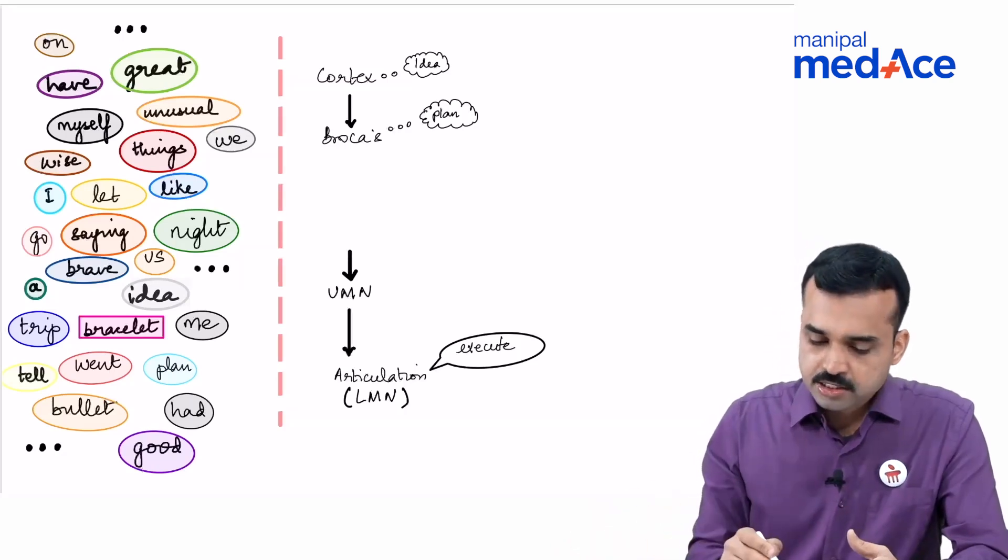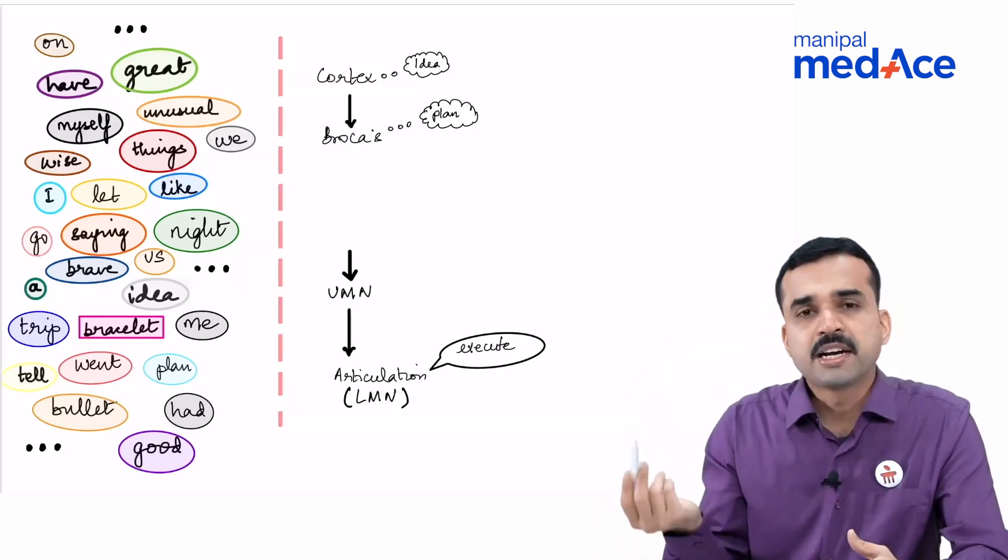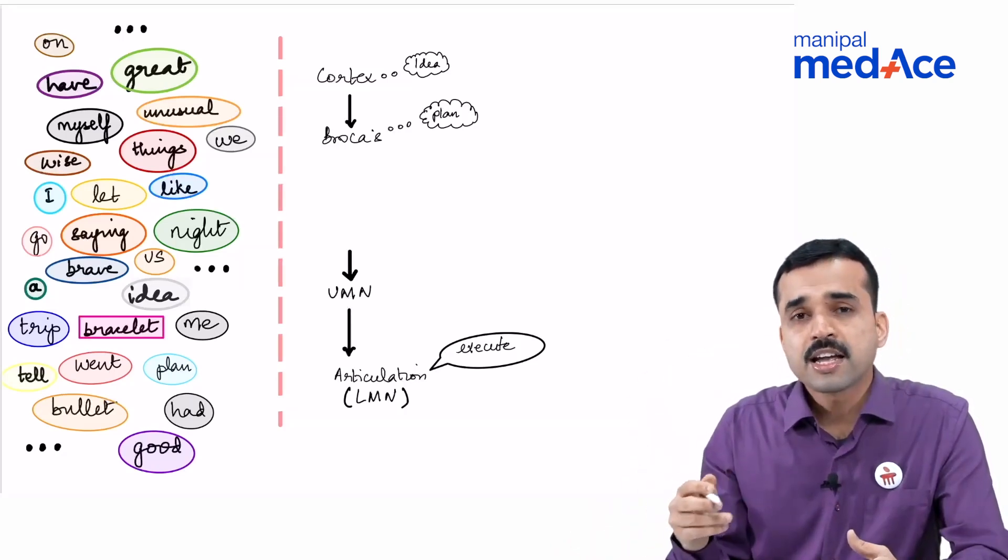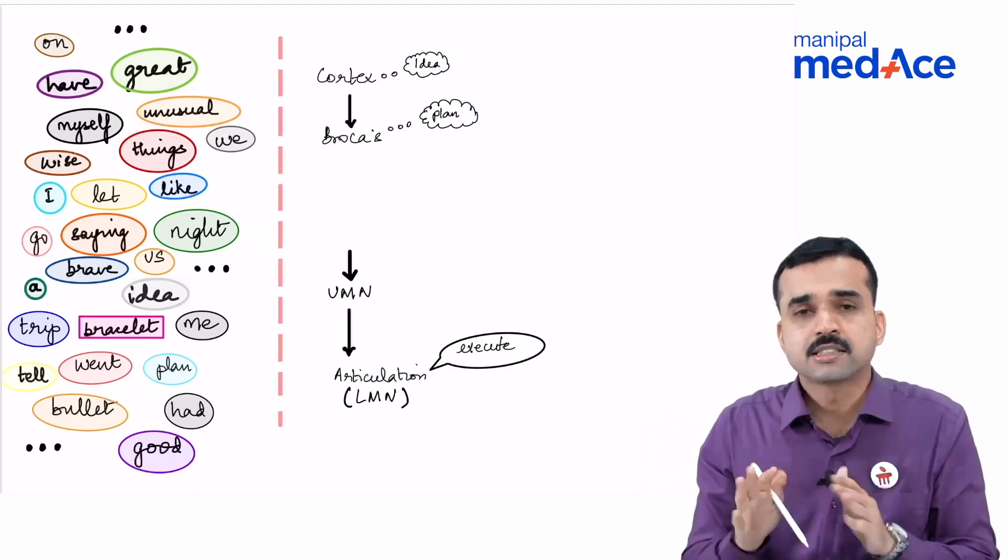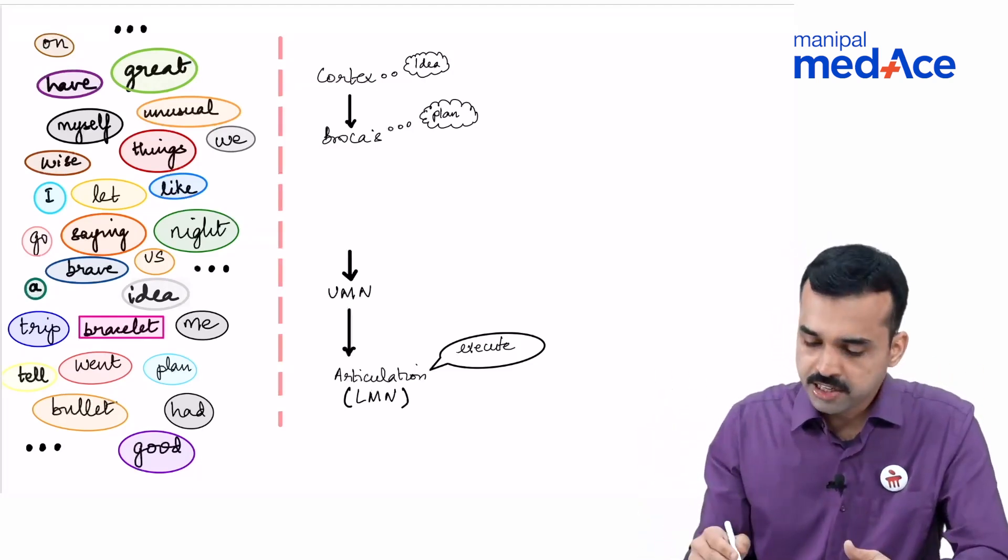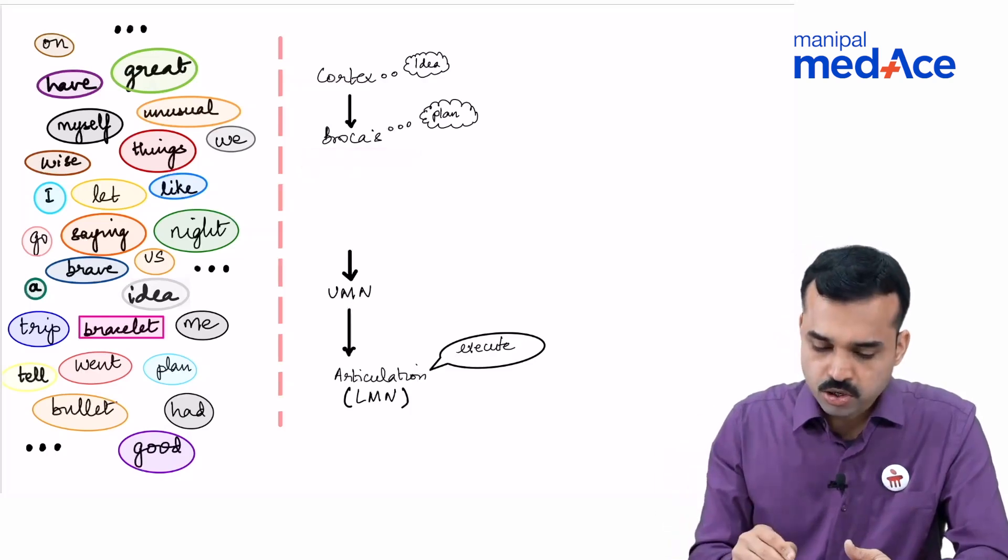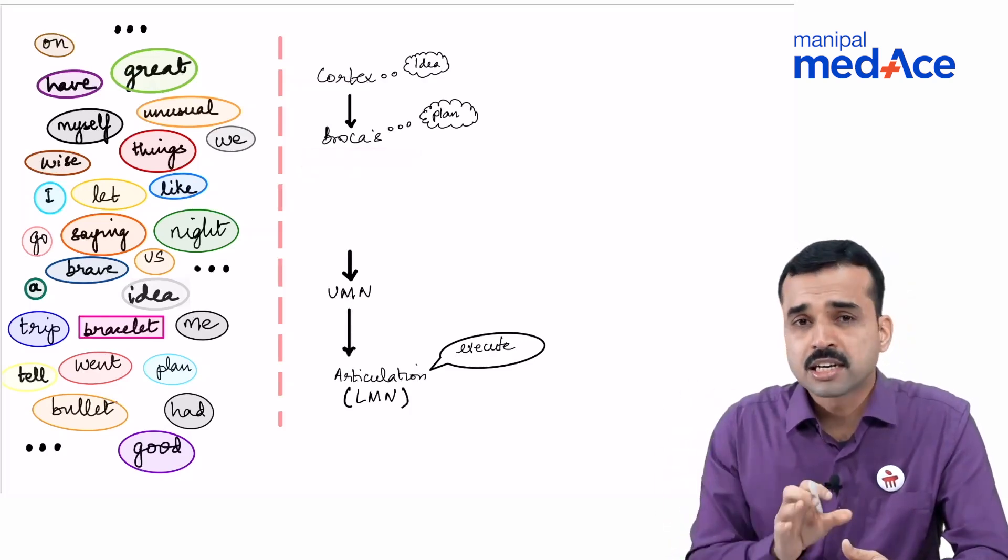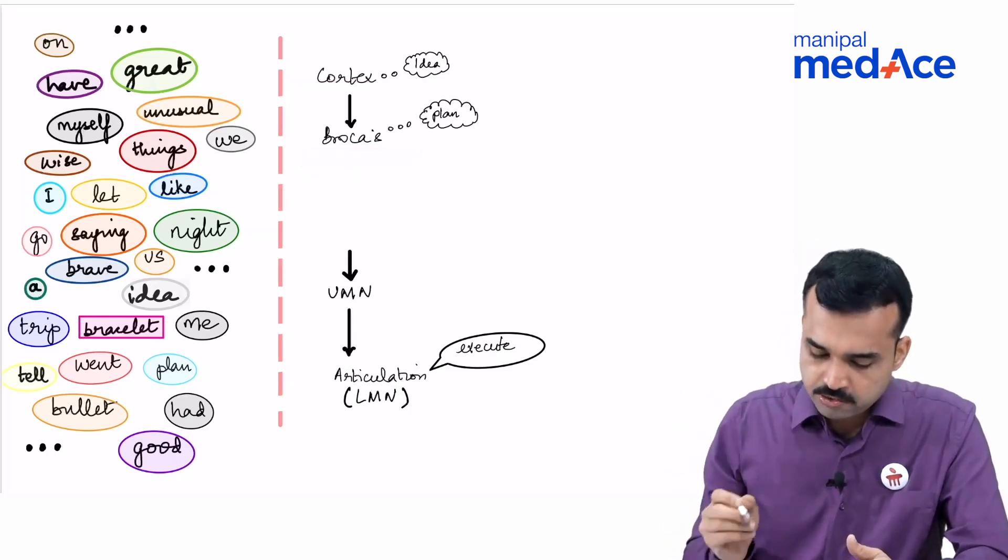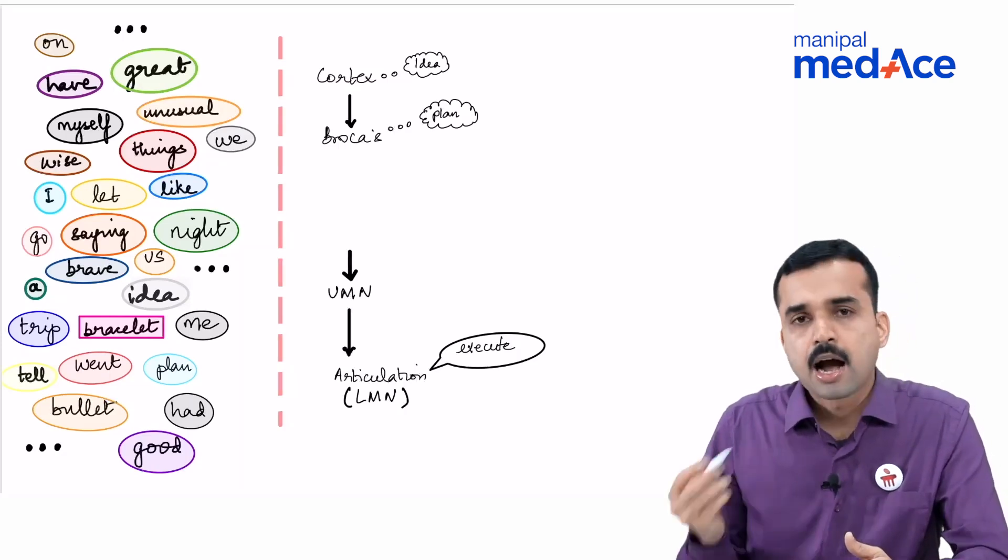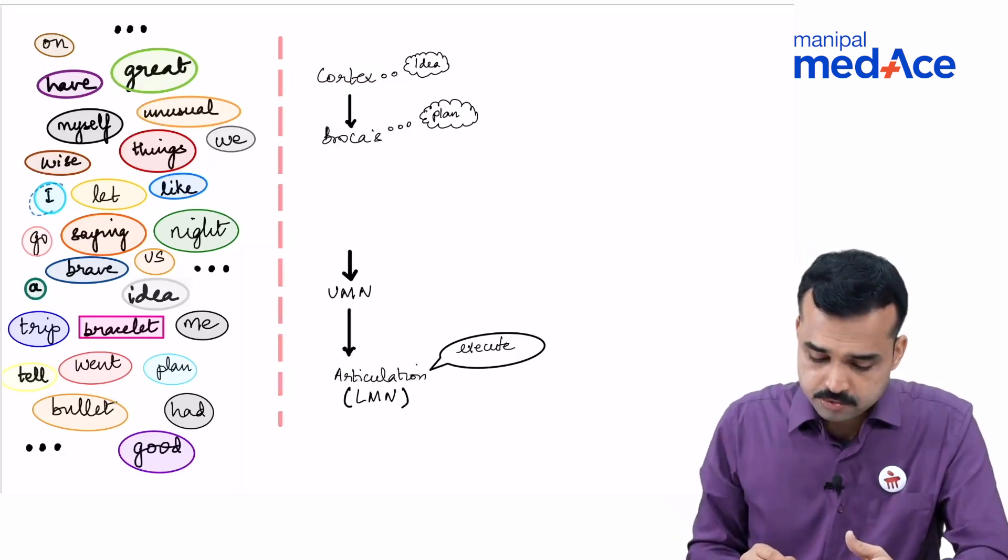If supposing my mind wants to say 'I have a great idea,' this is the sentence that the mind wants to express. So it will convey this to the Broca's area. Now the Broca's area knows what needs to be expressed. It just needs to select the right words in the right order with the right grammar. So if I have to say 'I have a great idea,' the Broca's area will now start selecting.